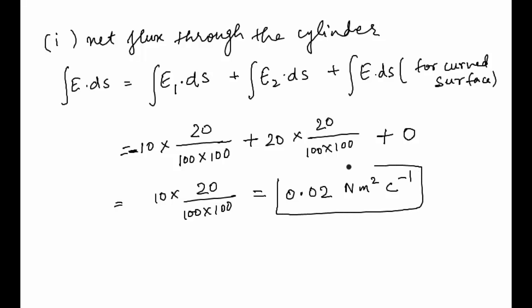In the second part, we need to find the charge enclosed in the cylinder. The expression for charge enclosed and net flux is: net flux = charge enclosed / ε₀. Our net flux is 0.02.